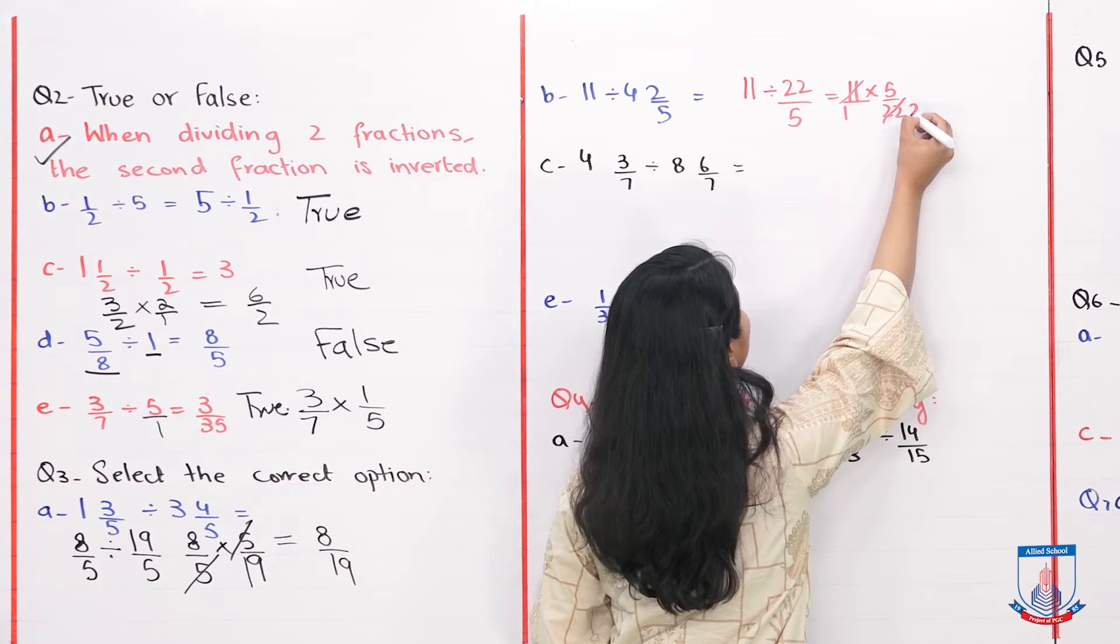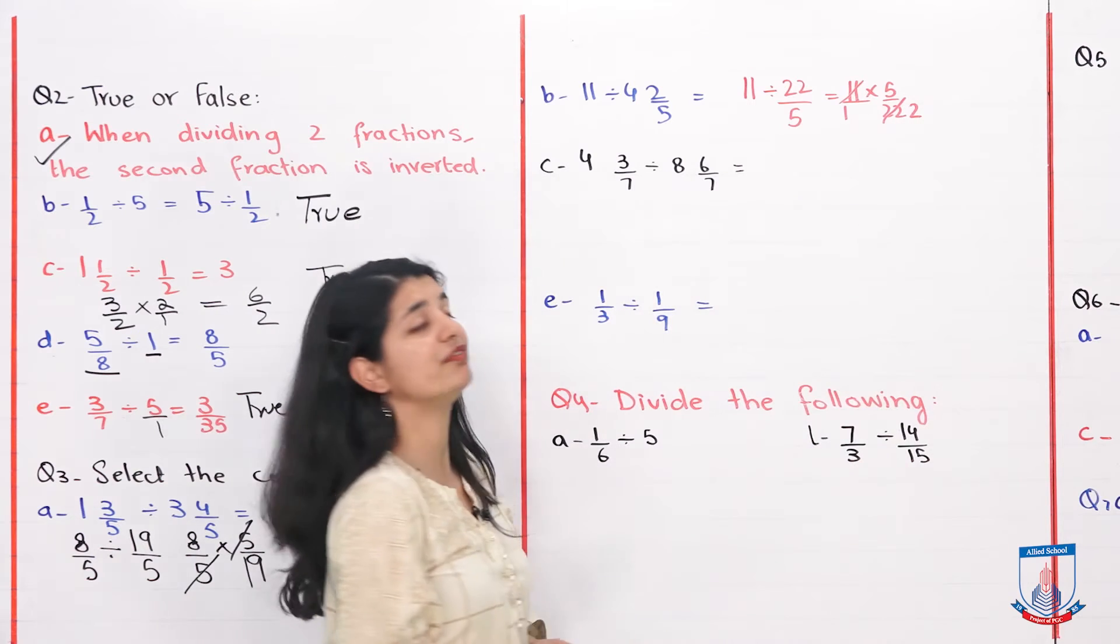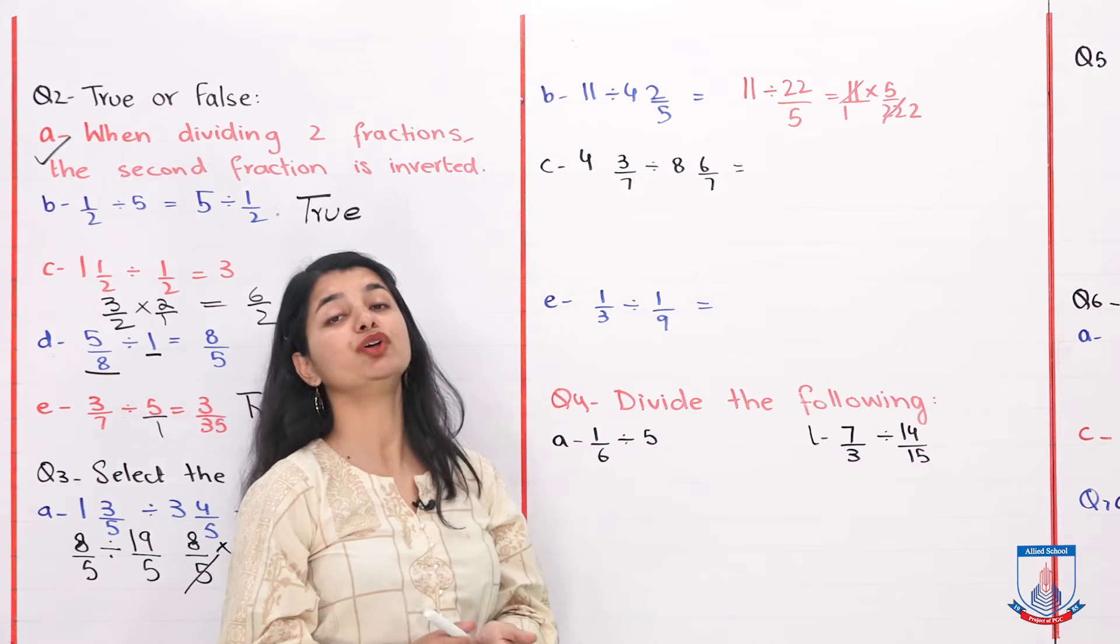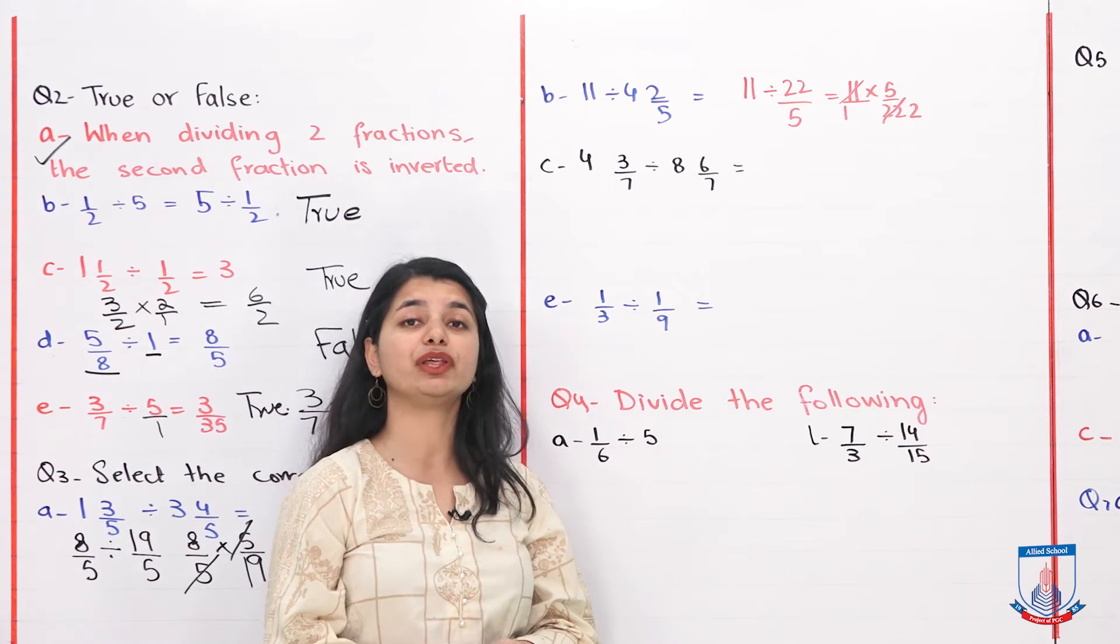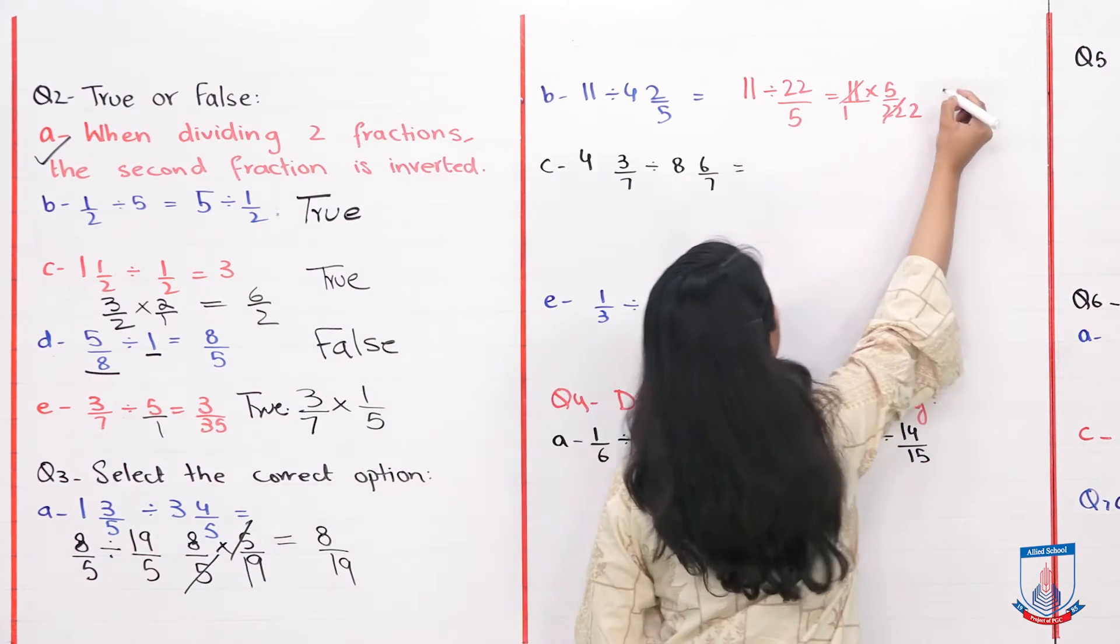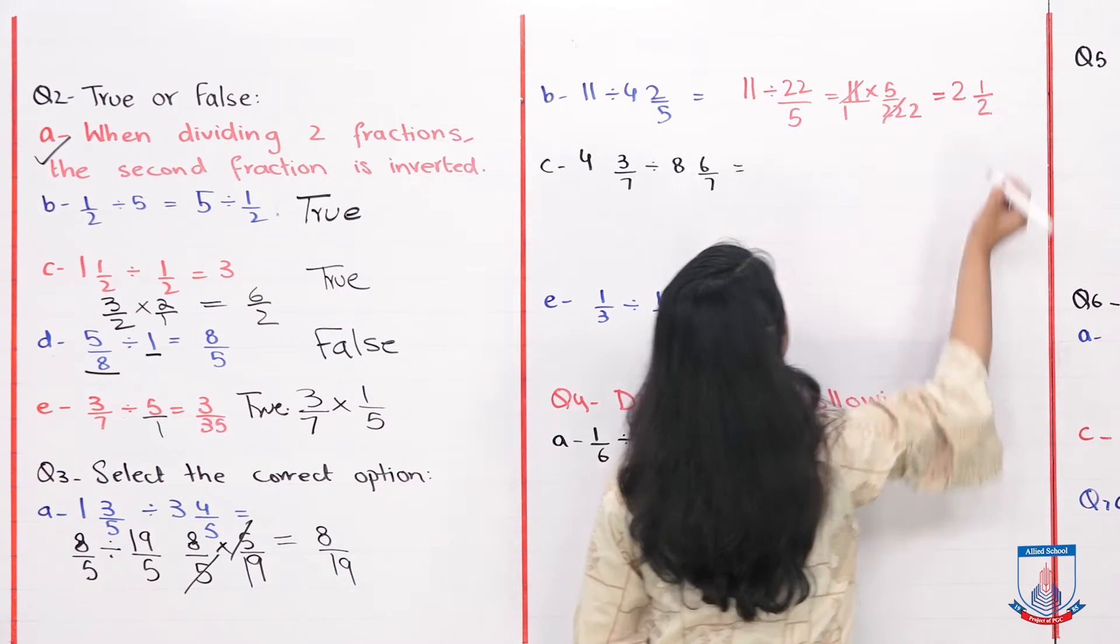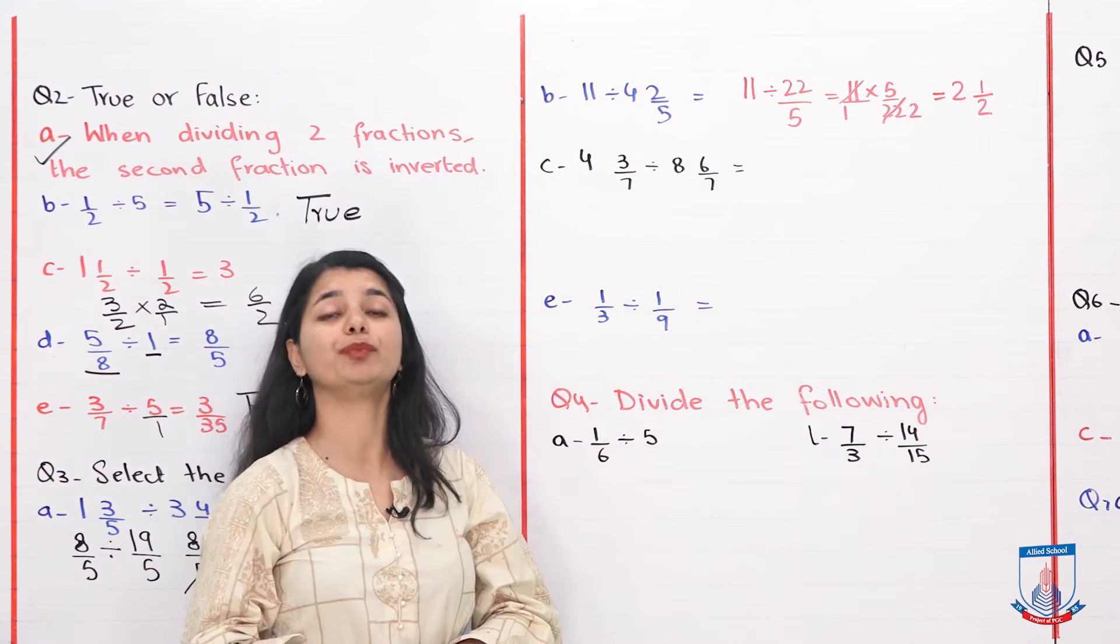Both divide by 11. Here 2 will remain, so what is your fraction? It's 5 over 2. You can divide it and you get 2 whole 1 by 2, and that will be the correct option for part B.